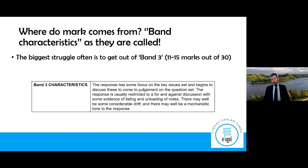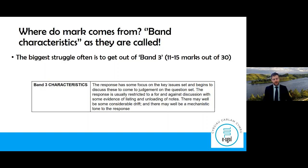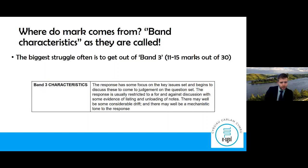We're going to jump straight in and think about what kinds of things are the examiners looking for — in this process of evidence gathering, what your teachers or lecturers in your schools and sixth form colleges are looking for. So where do marks come from? Marks come from what we call band characteristics.